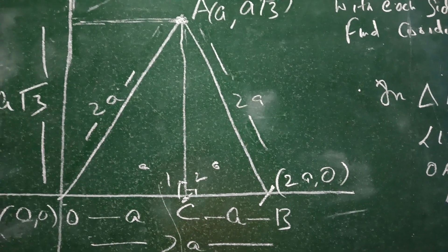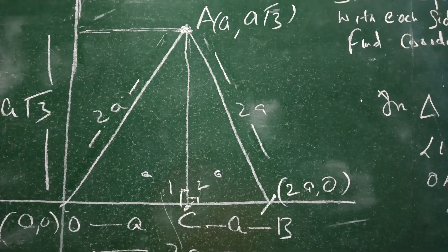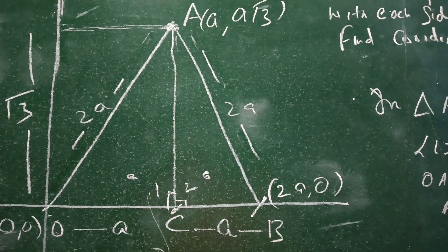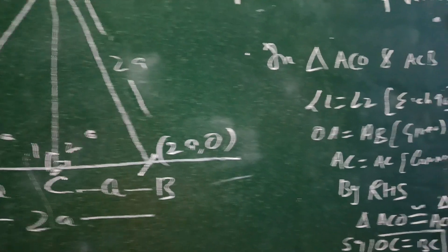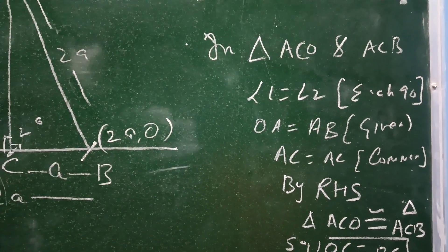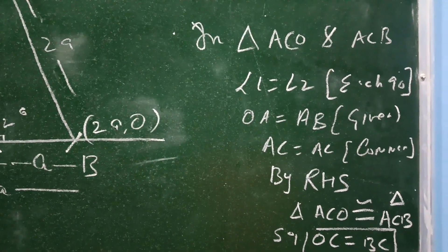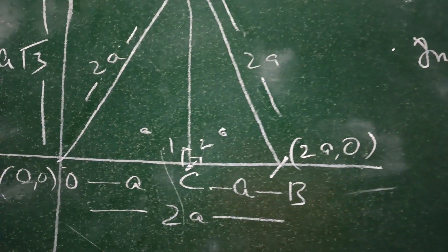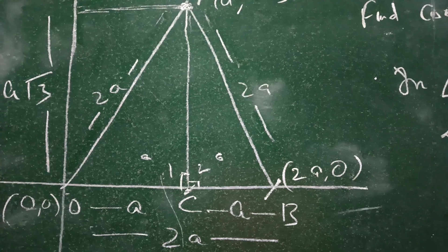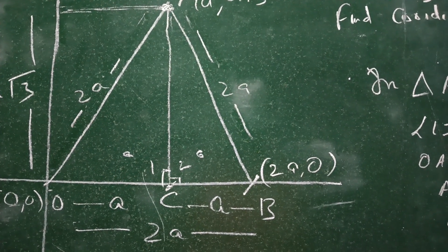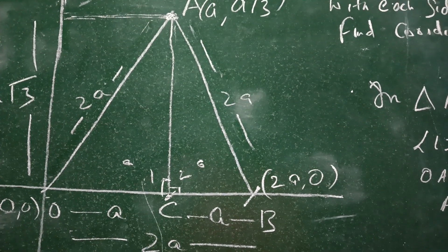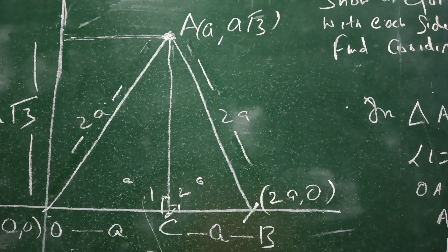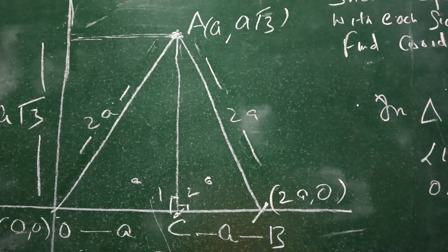So by RHS, we can conclude that triangle ACO is congruent to triangle ACB. You can see this here. So we have these two triangles congruent, which is why OC and BC are equal.